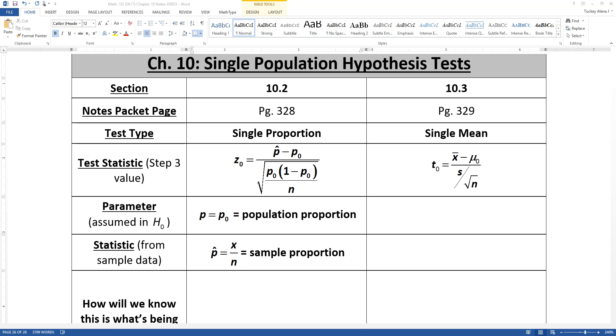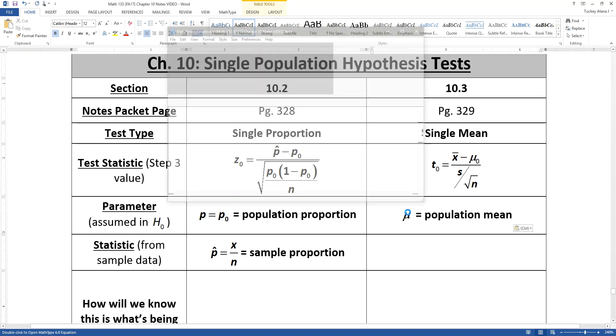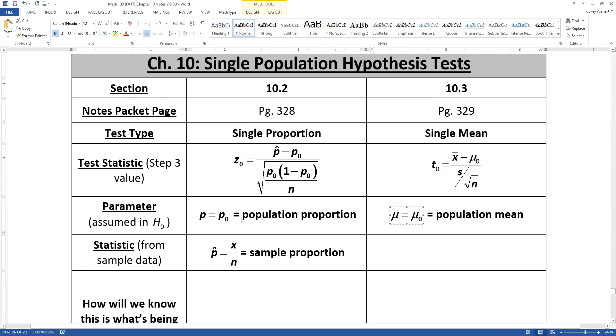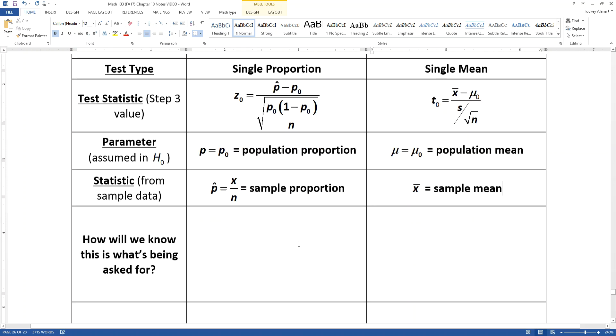For a mean, the population parameter that you're assuming to be true in your null hypothesis is mu0. You're assuming that mu equals mu0 in your null hypothesis. The test statistic we use to test that is x-bar, the sample mean. How far apart are my sample mean and my hypothesized population mean? Let's divide it by the standard error and see.